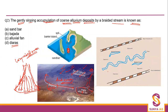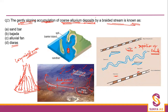Dairas are pieces of land created in the middle of a river, formed by deposition of sands. Coming back to the question — gently sloping accumulation of coarse alluvium deposits by a braided stream is known as a sandbar. A sandbar is a long raised area of sand below the surface of water, formed due to moving currents. So option A — sandbar — is the correct answer.